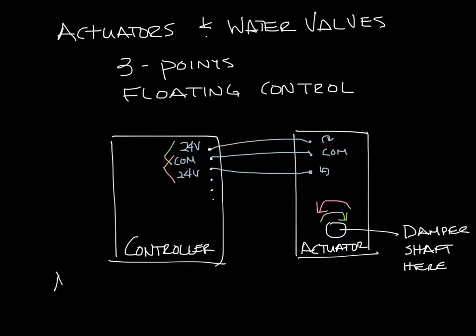The 24-volt signal would be sent to the actuator as long as the thermostat was calling for more or less air in the space. So the actuator would float between open and closed to maintain comfort in the space.